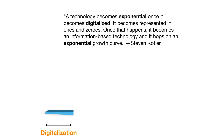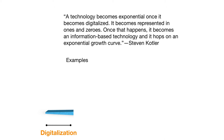The first D of this model is digitization. As Kotler says in Bold, a technology becomes exponential once it becomes digitized — represented in ones and zeros. Once that happens, it becomes an information-based technology and it hops on an exponential growth curve. An example of this is the digital camera: once photographs became digital, that technology left the analog world of film, film paper, and enlargers, and became digital.